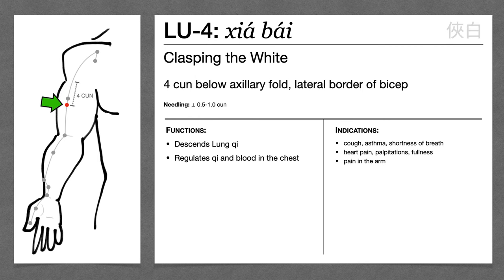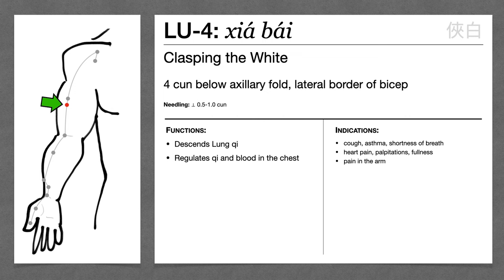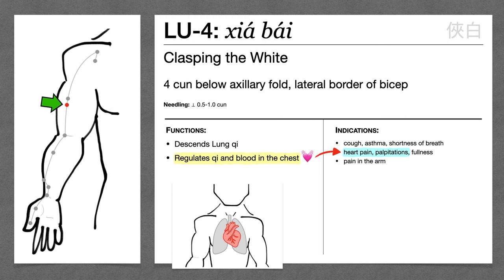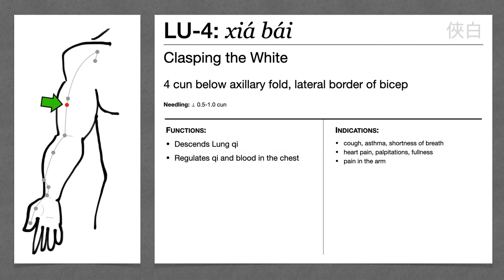Lung 4 is four cun distal to the axillary fold, and this is another one that's not super interesting. If a point doesn't have a category, it doesn't always do a whole lot. It descends lung qi like every other point on this channel. It's on the arm, so it treats arm pain. One thing that stands out is it regulates qi and blood in the chest, treating heart pain and palpitations, because the heart and lung reside together in the chest. But all in all, Lung 4 is just not very interesting and not a commonly used point.